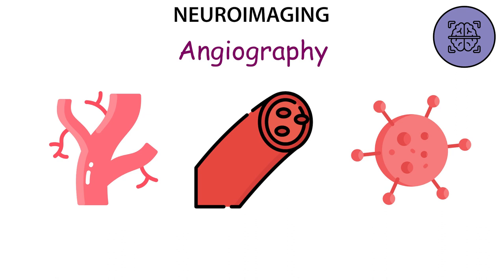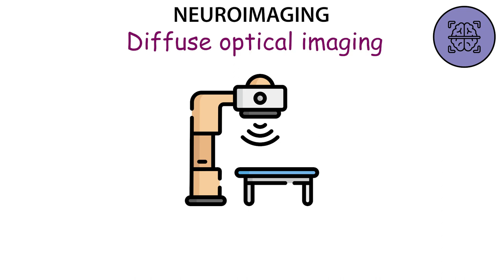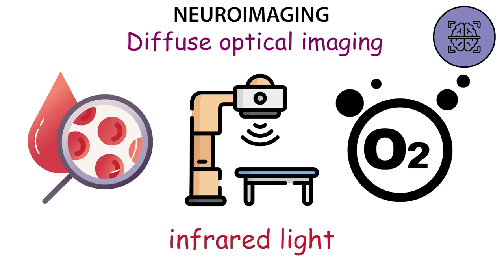Diffuse optical imaging, DOI, is a medical imaging modality that uses infrared light to image the human body. The technology measures the optical absorption of hemoglobin and relies on this spectrum as a function of oxygen saturation.